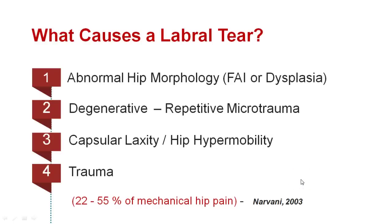What causes a labral tear? There are multiple reasons. The most common is that it is secondary to abnormal hip morphology such as FAI or dysplasia. In certain sports involving repeated pivoting motions on a loaded femur, such as hockey, golf, and ballet, it can lead to repetitive microtrauma. End range positions in certain martial arts can also strain the labrum. General hypermobility or capsular laxity is also a known factor, as is trauma, though that is less common. Labral tears have been implicated in 22 to 55 percent of mechanical hip pain.